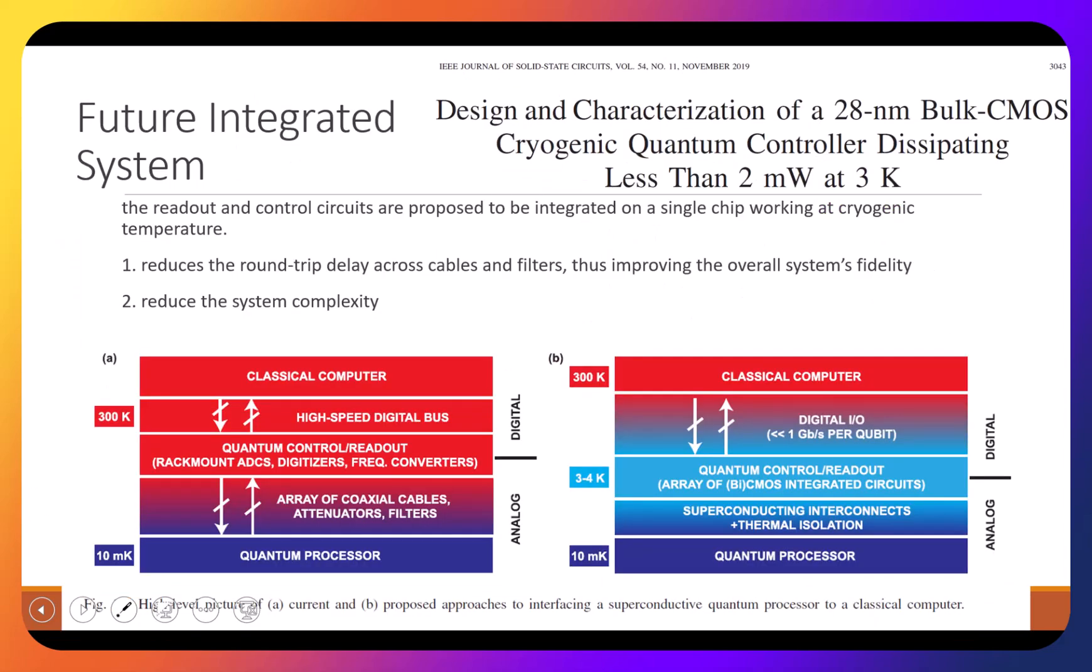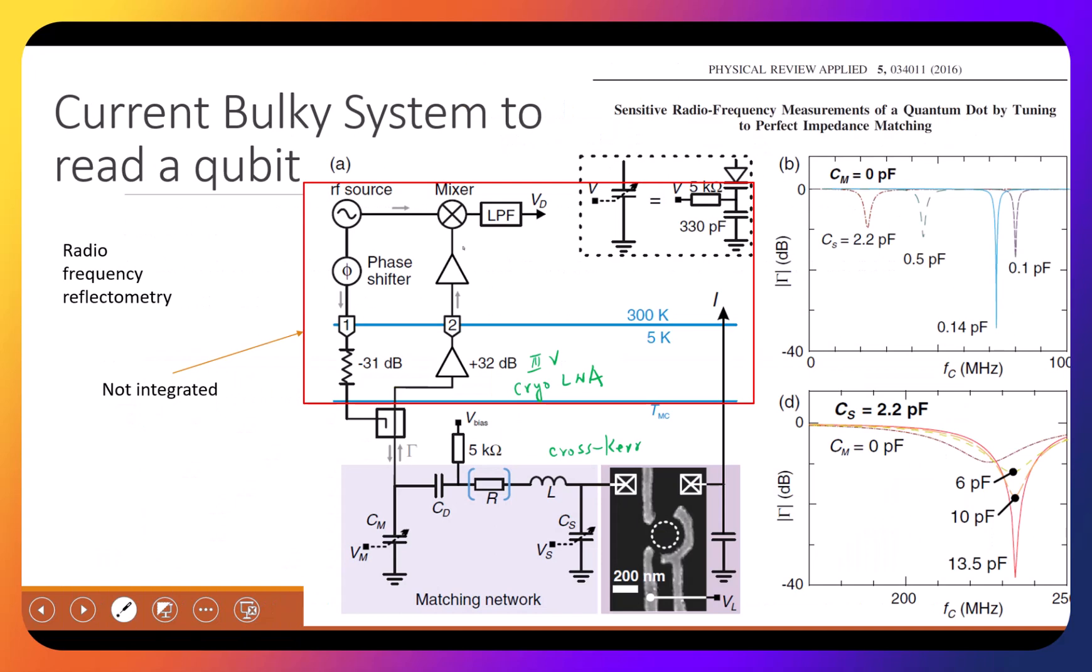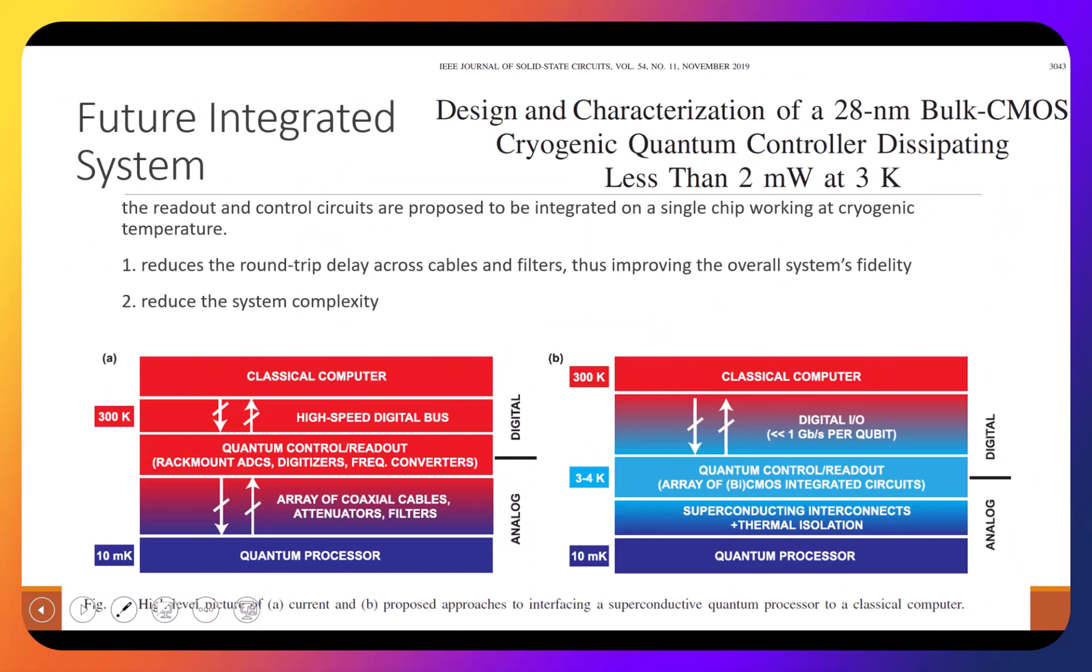Currently most of the system is that we have the classical computer, high speed digital circuit here. Actually you need to shape the pulse that you need, and that needs some high speed digital circuit to do arbitrary wave generation. You generate a Gaussian pulse with certain shape to have the maximum benefit for reading with highest fidelity. They are done on the digital side, and then you go through coaxial cable, attenuator, and filter to reach the quantum processor. This is low temperature, so you bring the thermal noise there, which is not good.